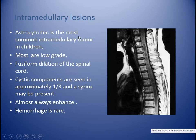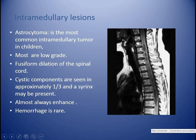Intramedullary lesions: astrocytoma first. It is the most common intramedullary tumor in children, making up 30%. Most are low-grade, while rarely — less than 2% — high-grade glioblastoma multiforme may occur. It involves several segments, causing fusiform dilatation of the spinal cord. Cystic components are seen in approximately one-third, and a syrinx may be present. It almost always enhances, and hemorrhage is rare compared to ependymoma.